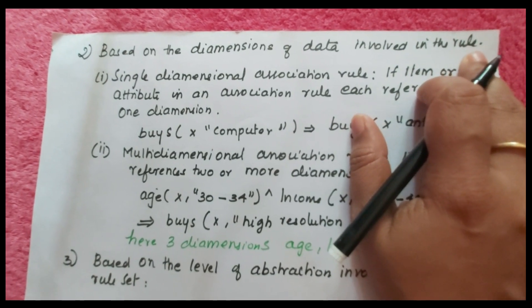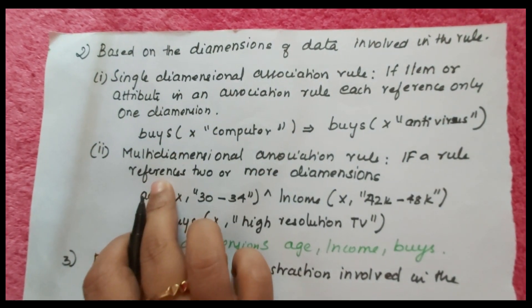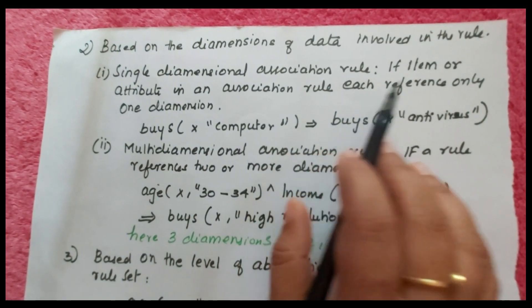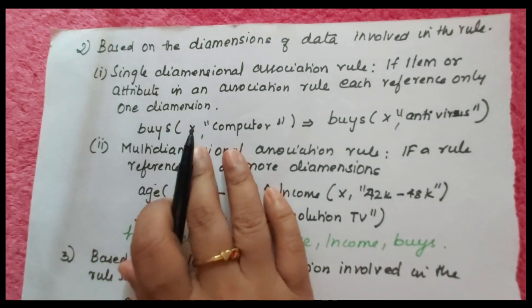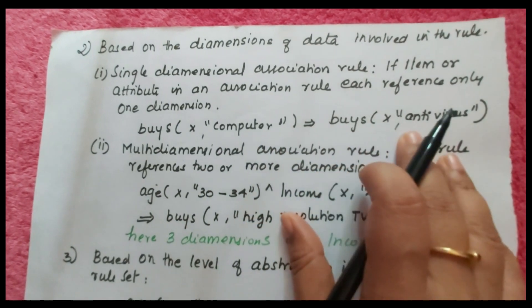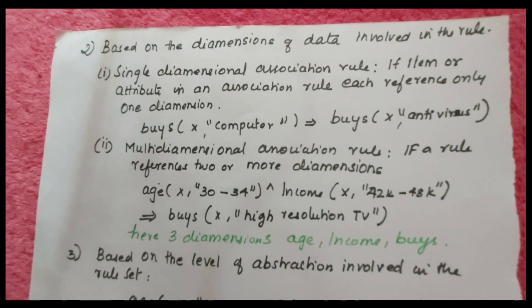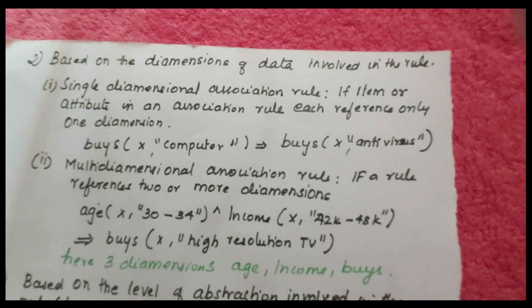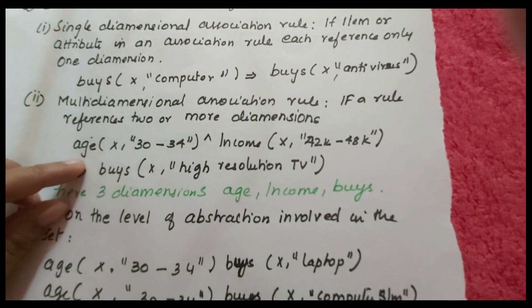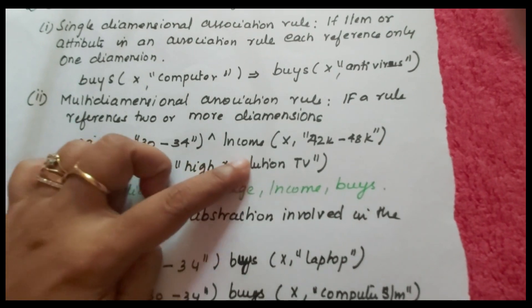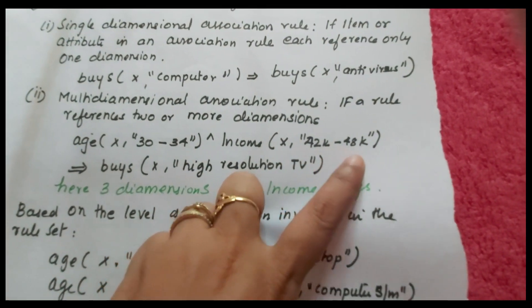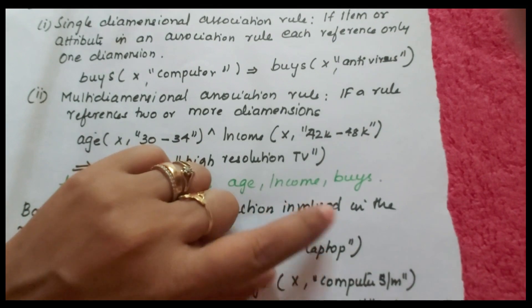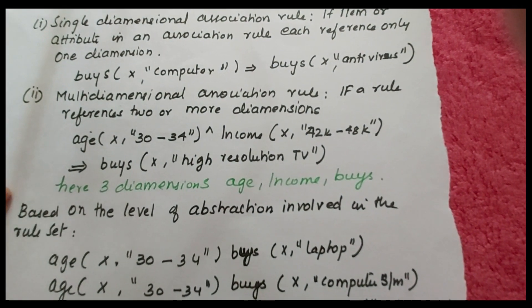The second classification criterion is based on the dimension of data involved. A single-dimensional association rule references only one dimension — for example, 'buys X computer, buys X antivirus' deals only with the dimension 'buys.' When more than one dimension is involved, it is called a multi-dimensional association rule — for example, age between 30 to 34 and income between 42k to 48k, then buys a high-resolution TV involves three dimensions: age, income, and buys.